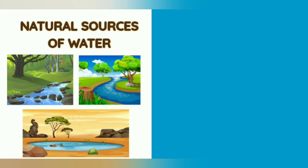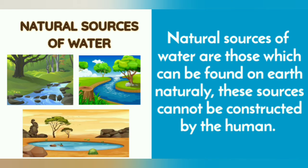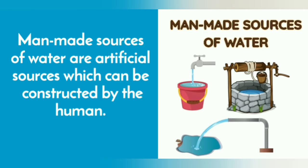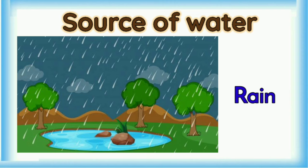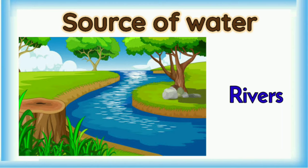Sources of water. Today we will learn about the natural sources of water and man-made sources of water. Natural sources of water are those which can be found on earth naturally. These sources cannot be constructed by humans. Man-made sources of water are artificial sources which can be constructed by humans.